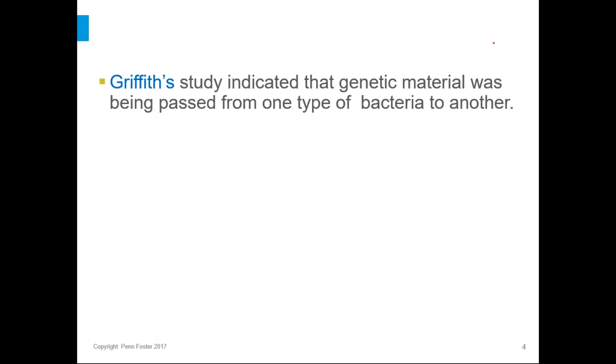The chapter opens with some summaries of some of the very early studies of DNA as we tried to figure out what it was. So we start with Griffith, a scientist that did an experiment on infected mice that indicated that genetic material could be passed from one type of bacteria to another.